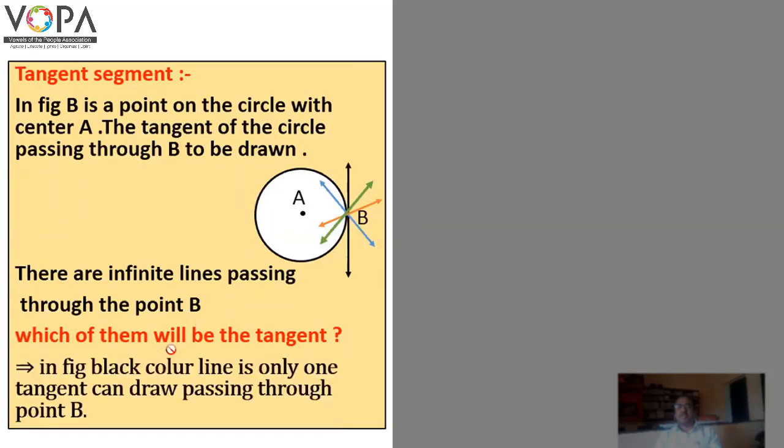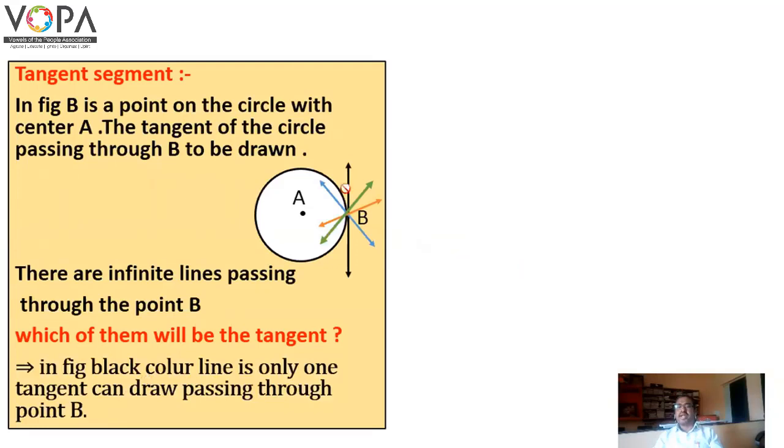In the figure, the black color line is the only one tangent that can be drawn passing through point B. Point B is on the circle.